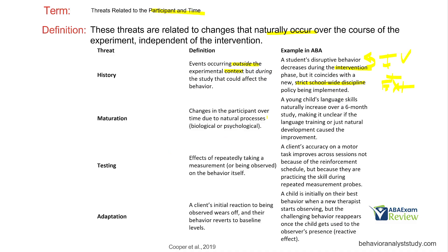Maturation: changes in the participant over time due to natural processes. For instance, a child's language skills naturally increase over a six-month study. If I have a kid going from two to three years old versus 19 to 20 in a language skills study, the two-to-three-year-old would be more impacted by maturation. When you're 19, you more or less have a functional vocabulary. However, many two-year-olds are just starting to develop, so we've got to be aware of that.